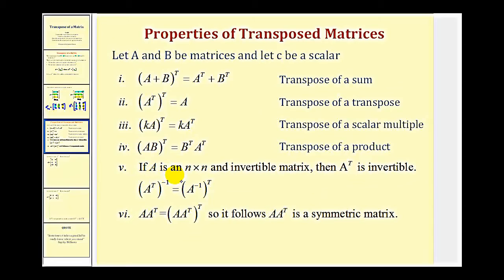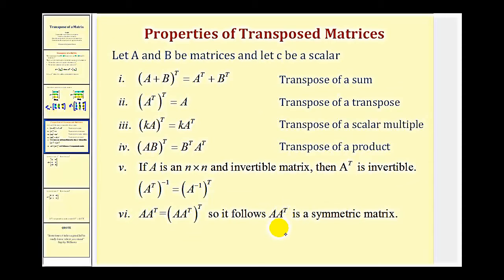Property five: if A is an n by n invertible matrix, then the transpose of matrix A is also invertible, and the inverse of the transpose of A is equal to the transpose of the inverse of A. The last property: A times the transpose of A equals the transpose of A times A, and since these are equal, A times the transpose of A is a symmetric matrix — meaning its transpose equals itself.